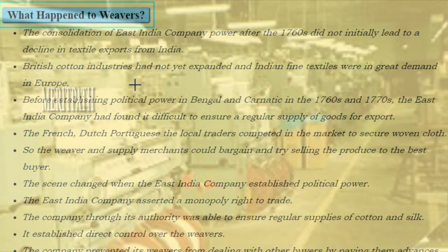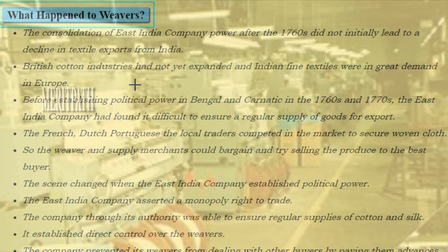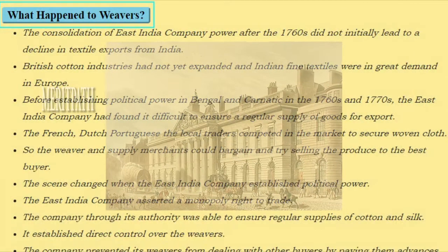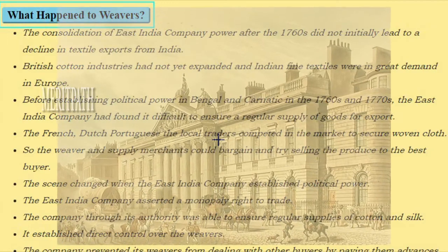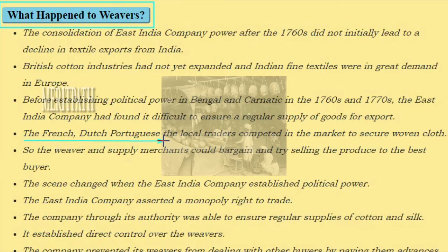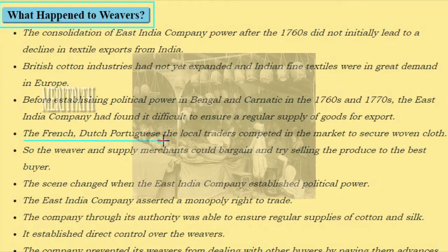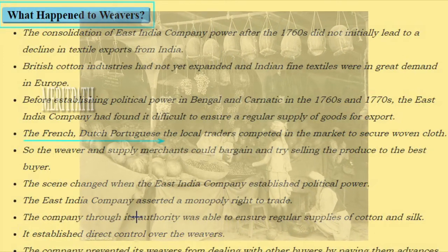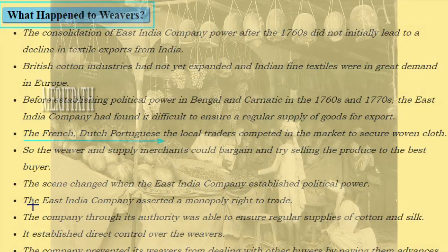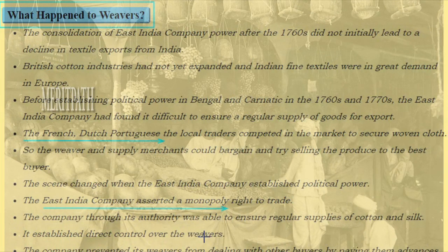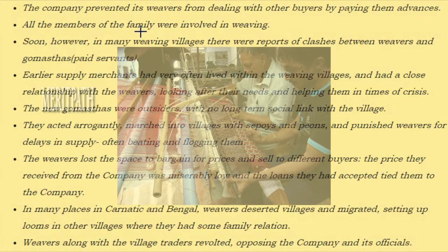The consolidation of East India Company power after the 1760s did not initially lead to a decline in textile exports from India. British cotton industries had not yet expanded and Indian fine textiles were in great demand in Europe. Before establishing political power in Bengal and Carnatic in the 1760s and 1770s, the East India Company had found it difficult to ensure a regular supply of goods for export. The French, Dutch, Portuguese and local traders competed in the market to secure woven cloth, so weavers and supply merchants could bargain and try selling to the best buyer. This scene changed when the East India Company established political power. The company asserted a monopoly right to trade and was able to ensure regular supplies of cotton and silk by establishing direct control over the weavers.